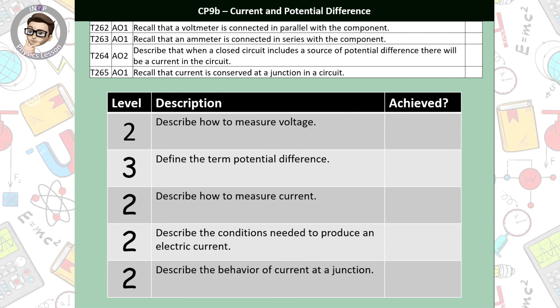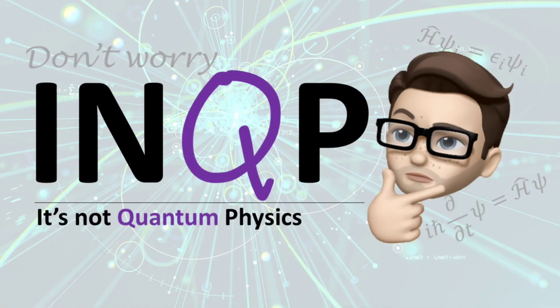It's the end of the lesson. Checking the specification: a voltmeter is connected in parallel and an ammeter in series. When a closed circuit includes a source of potential difference there will be a current — the circuit must be complete because you can't push electrons over a gap. Current is conserved — what flows into a junction equals what flows out. We've covered: how to measure voltage, define potential difference, measure current, conditions for electric current, and current behaviour at junctions. If you have any questions, email us, and go have a go at the questions set for you.